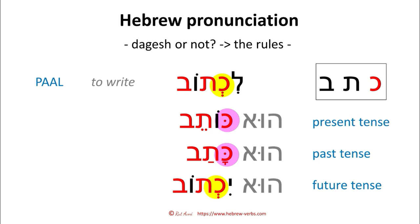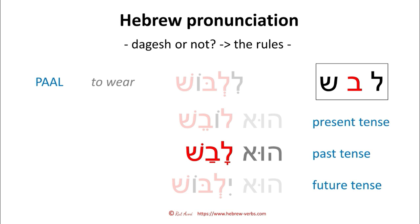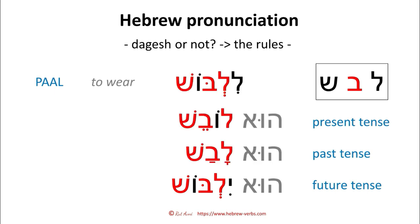The other verb we have seen — 'lilbosh' — let's see how it changes. Here we do have a dagesh on the infinitive, as we already saw. Present tense: 'hu lovesh'. Past tense: 'hu lavash'. Future tense: 'hu yilbash'. Summary: it is the exact opposite — we have a dagesh in the infinitive and the future tense, but we do not have a dagesh in the present tense and the past tense.